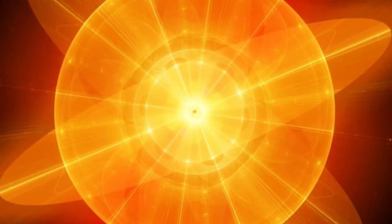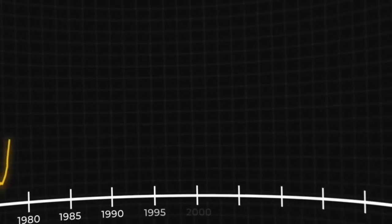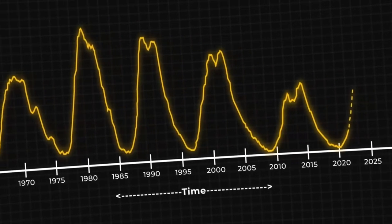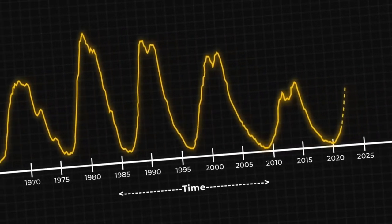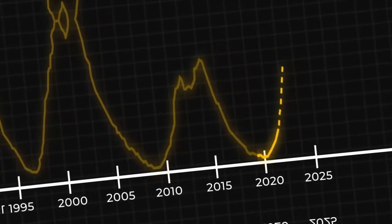The sun, our celestial lifeblood, is not just a static presence in the sky. It is a dynamic sphere of plasma, constantly changing and evolving. Every 11 years, it undergoes a cycle of increased and decreased activity known as the solar cycle. We are currently witnessing the 25th cycle of this phenomenon since systematic records began in 1755.